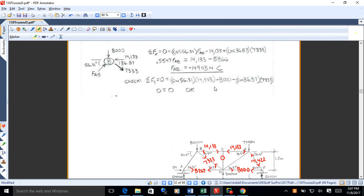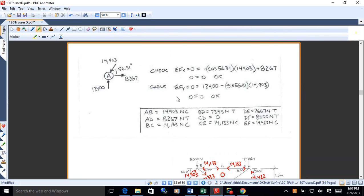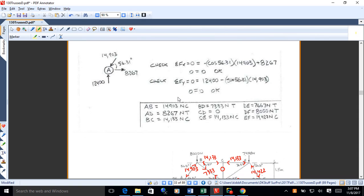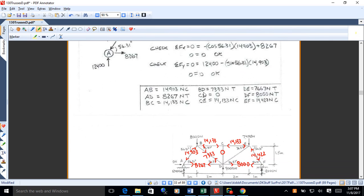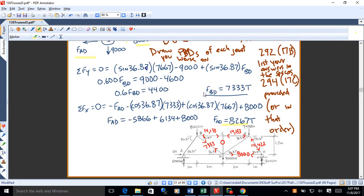And that's pushing. So that's compression. I could do a sum of FY and set that equal to 0 as a check. I should get answers that are about equal to 0 when I run that and get 0 as about equal to 0. There might be a little bit of rounding error in that. I could also go to joint A and use that as a check with sum of FX and sum of FY. And again, I should get essentially 0 equals 0. All right. So that's how you work through trusses.